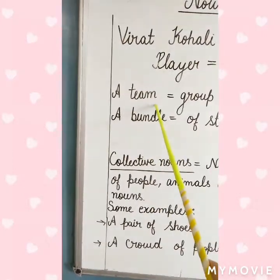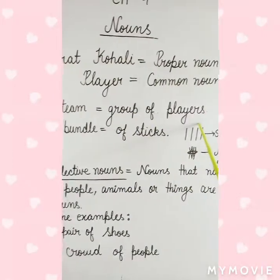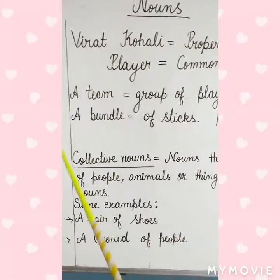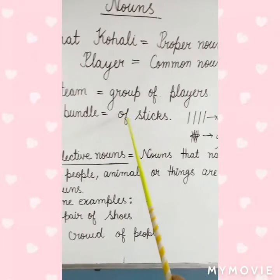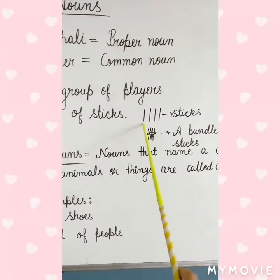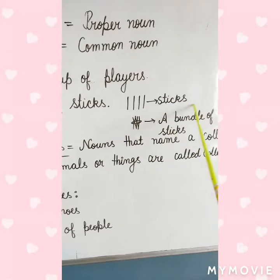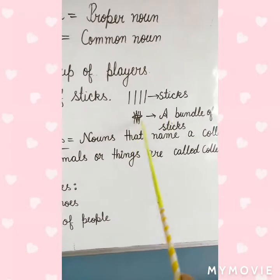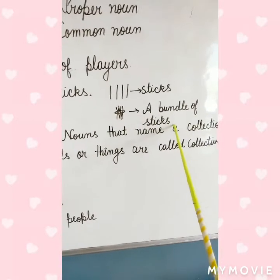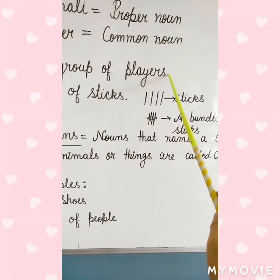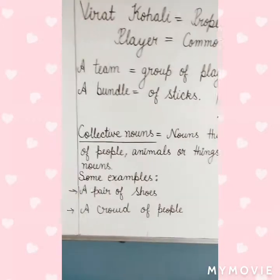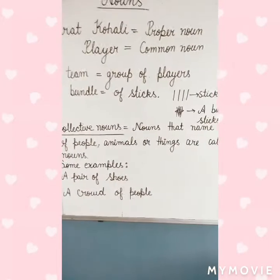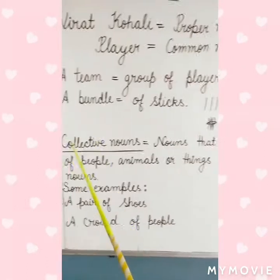A team means a group of players. A bundle of sticks — these are sticks. When I make it a bundle, a bundle of sticks means it is a collection, a group. So in this way, when we express some nouns like these, that is called collective nouns.